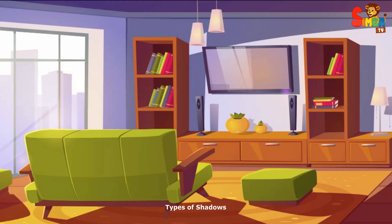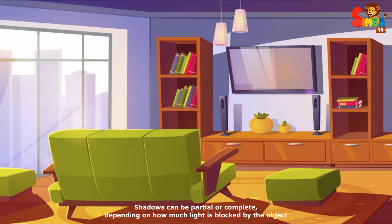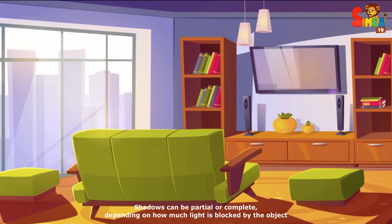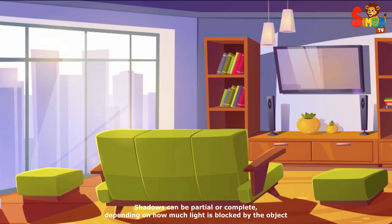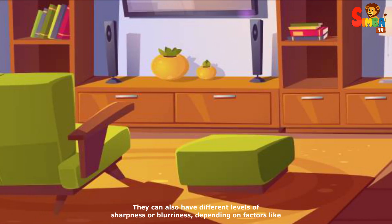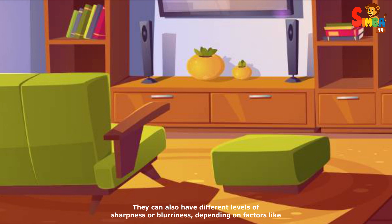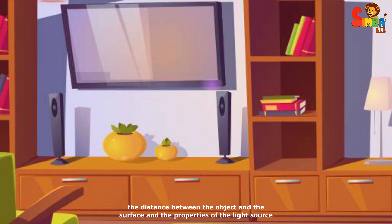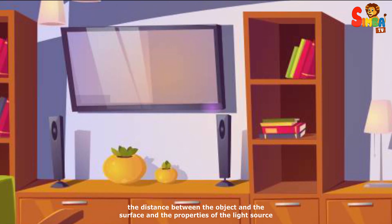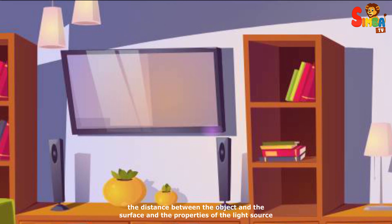Types of shadows. Shadows can be partial or complete, depending on how much light is blocked by the object. They can also have different levels of sharpness or blurriness, depending on factors like the distance between the object and the surface, and the properties of the light source.